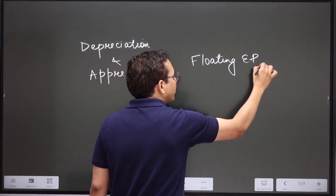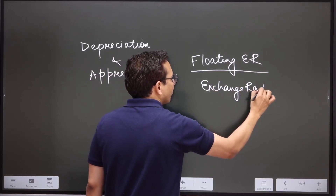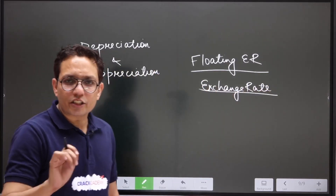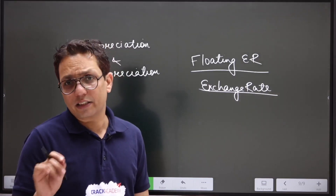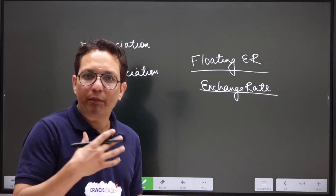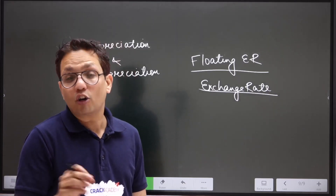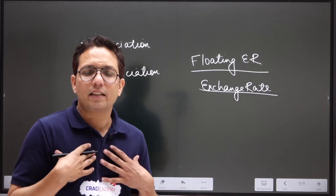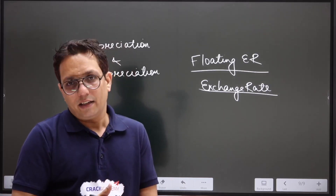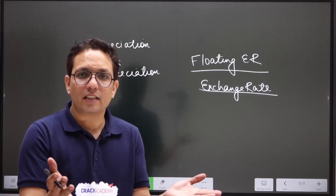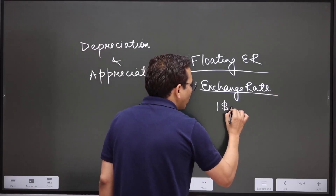Let's start with exchange rate. Exchange rate means what is the value of one currency in another currency. Suppose I am a US citizen coming to India — all expenses will be in rupees, but I have dollars. If I give dollars to Indian banks, how much rupees will I be getting in return? That is called exchange rate. For example, if the exchange rate is one dollar equal to 80 rupees.